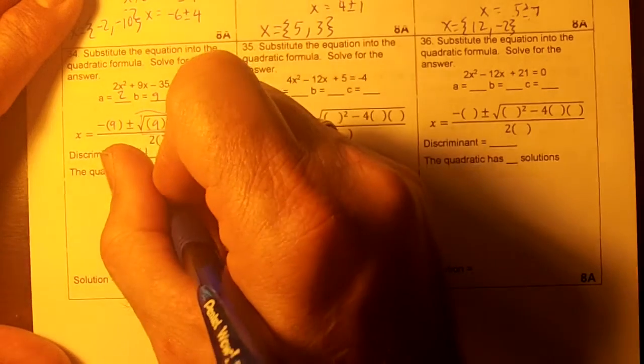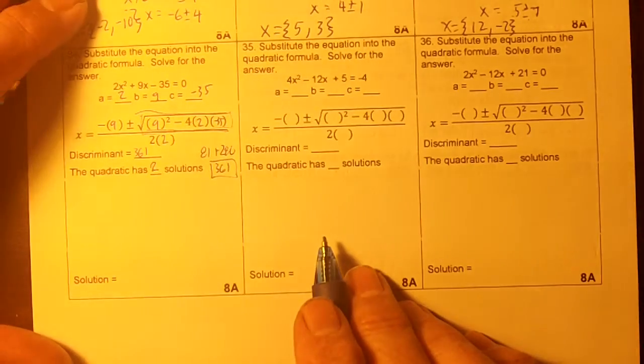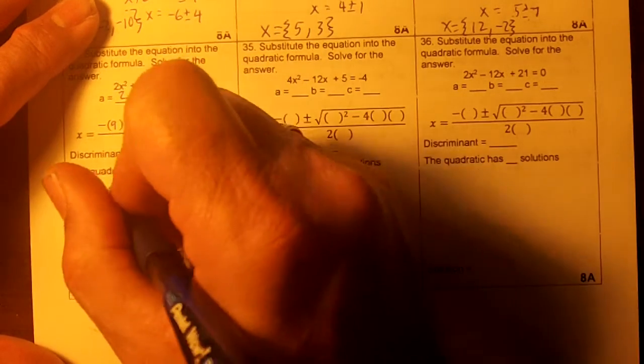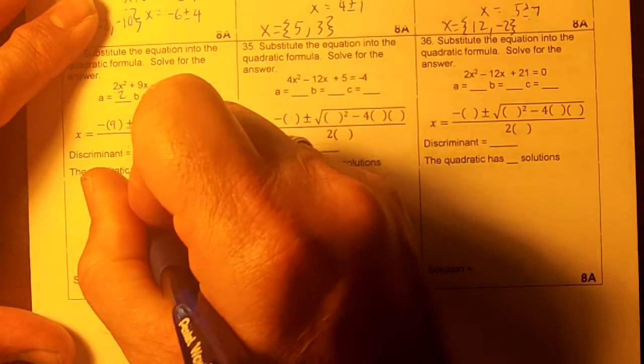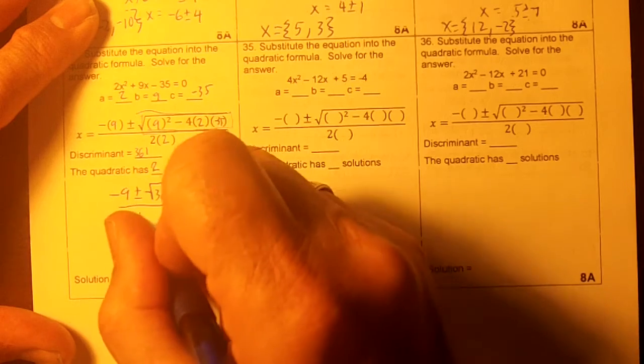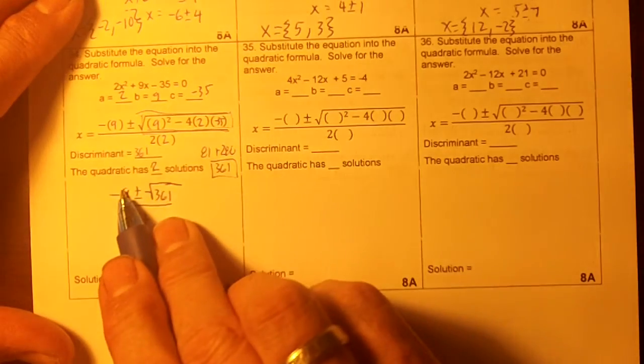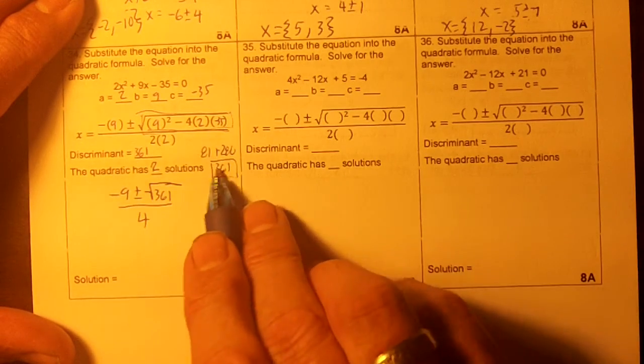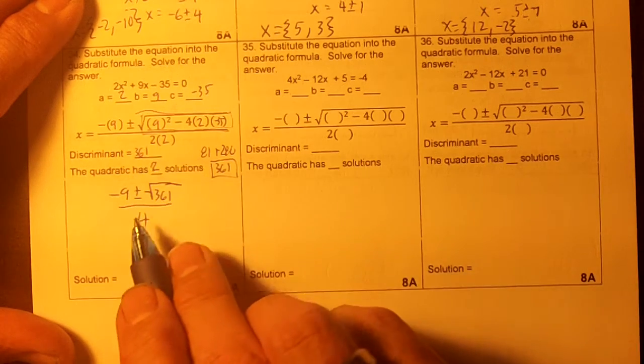Since the discriminant is positive, it has two solutions. Okay, now then we're going to rewrite this. Negative 9 plus or minus the square root of 361 all over 4. So this turned into the negative 9. I calculated this out to be 361. Two times 2 is 4.